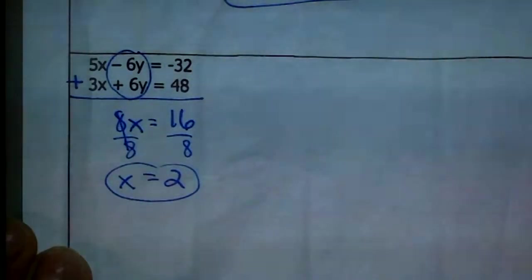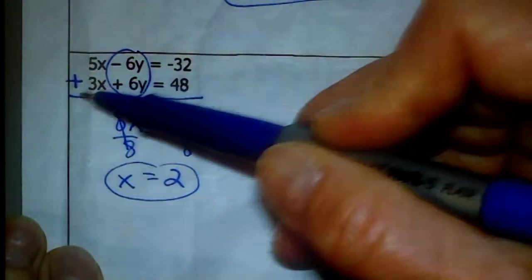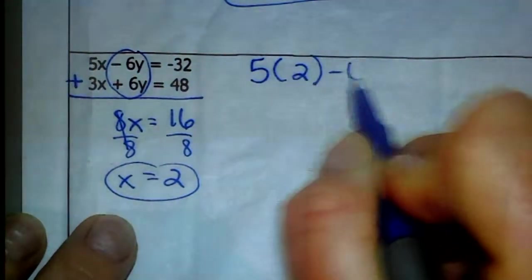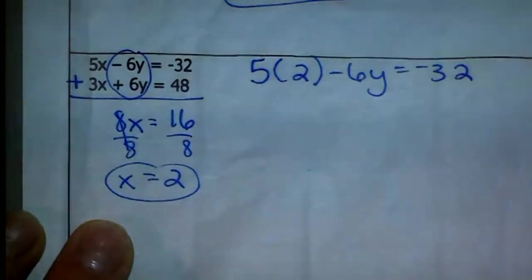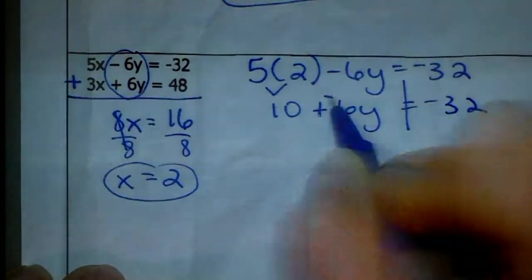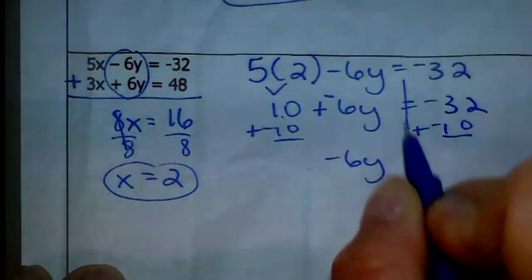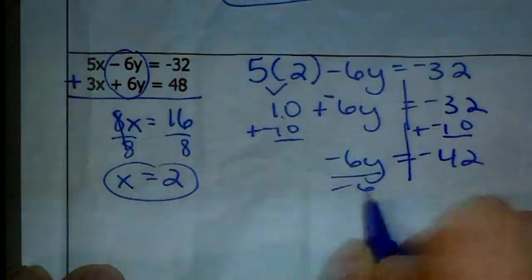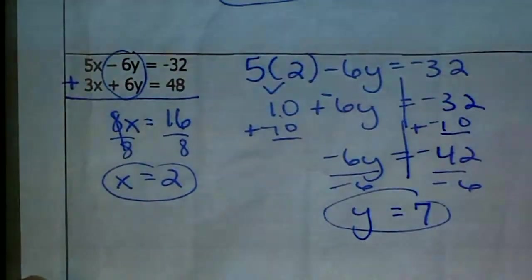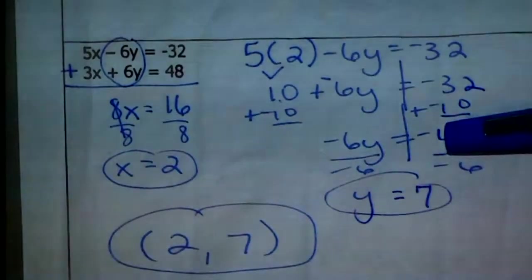Now that we know X is 2, we plug it into one of the equations to find Y. I'll choose the top one: 5 times 2 minus 6Y equals negative 32, so 10 minus 6Y equals negative 32. I'll add negative 10 to get negative 6Y equals negative 42. Divide by negative 6 and Y equals positive 7. A negative divided by a negative is a positive — a lot of people make errors with signs there. The solution to this system is X equals 2, Y equals 7. Plugging back into each equation helps catch those mistakes.